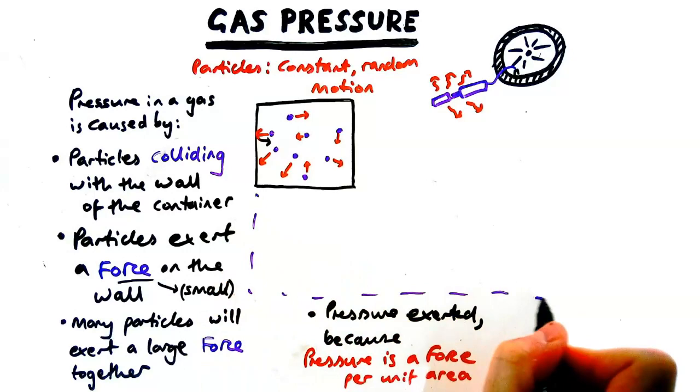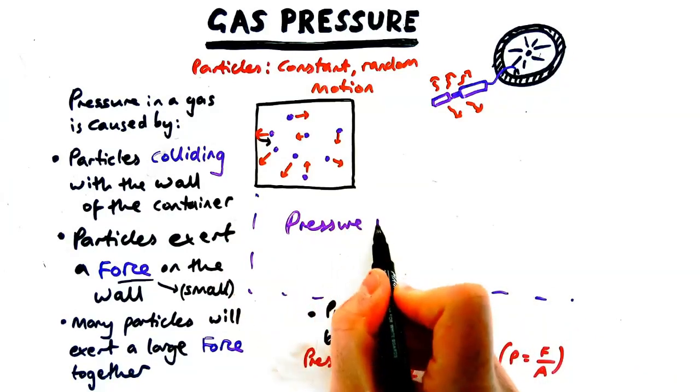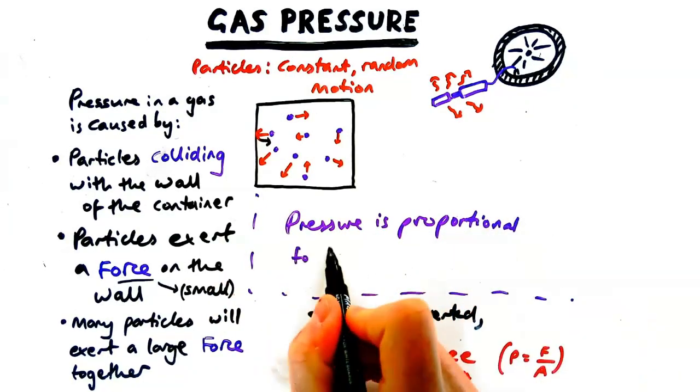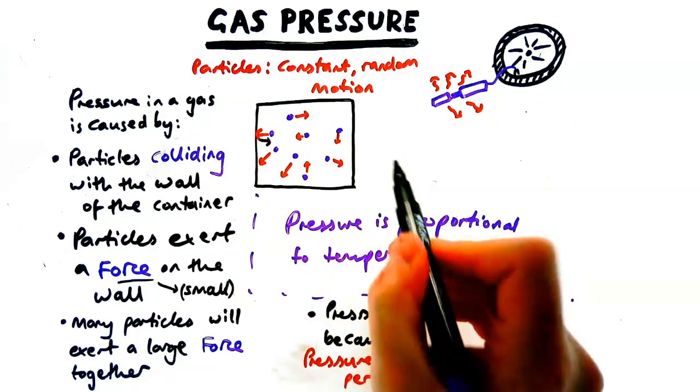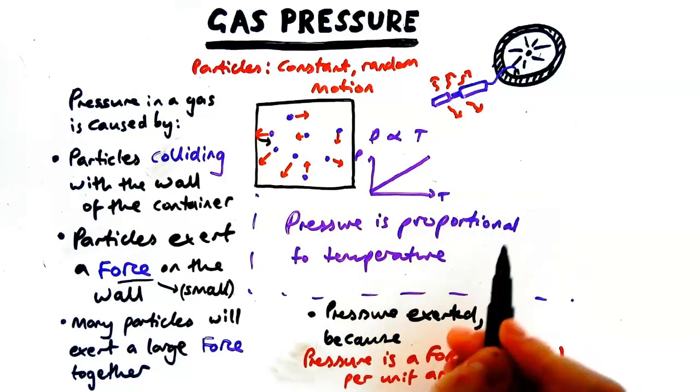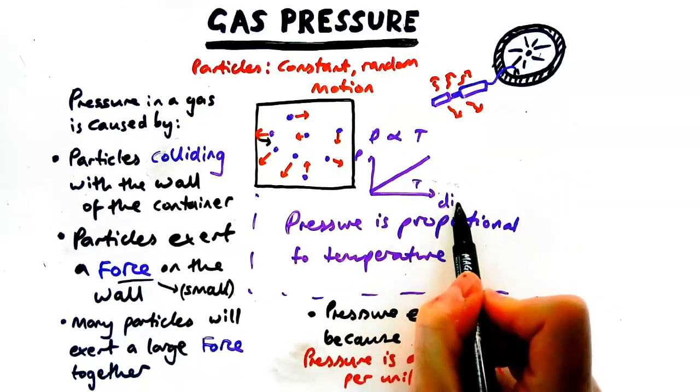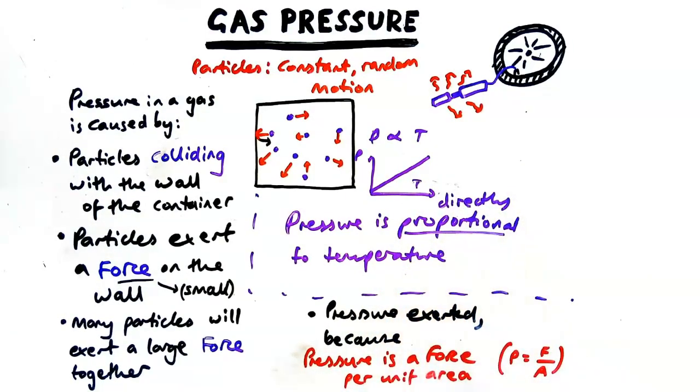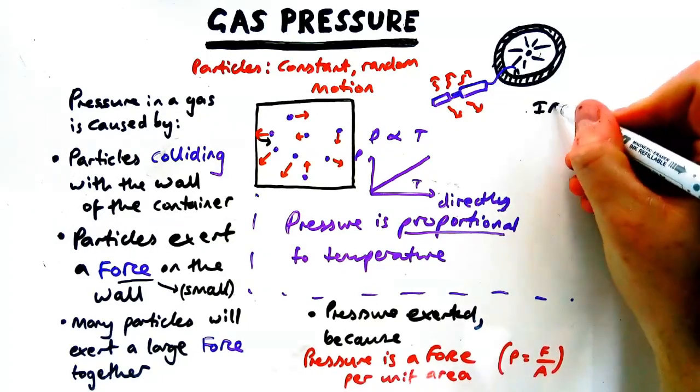Let's look at what affects pressure then. So pressure is directly proportional to temperature. So what that means if I was to draw a graph of temperature and pressure it would look like this. So directly proportional straight line through the origin through the zero point of the graph. Now why is this the case? Why does temperature affect pressure?